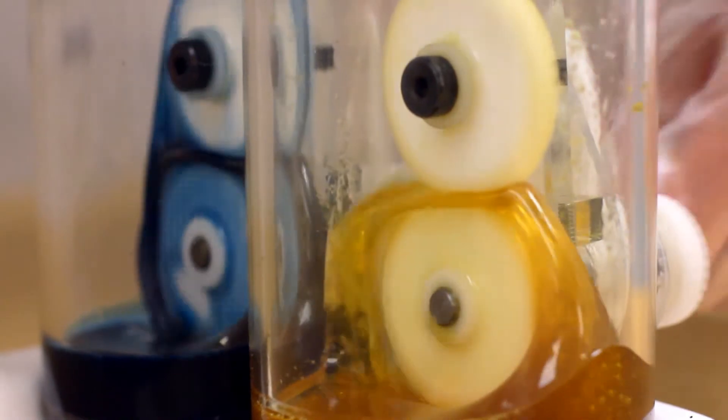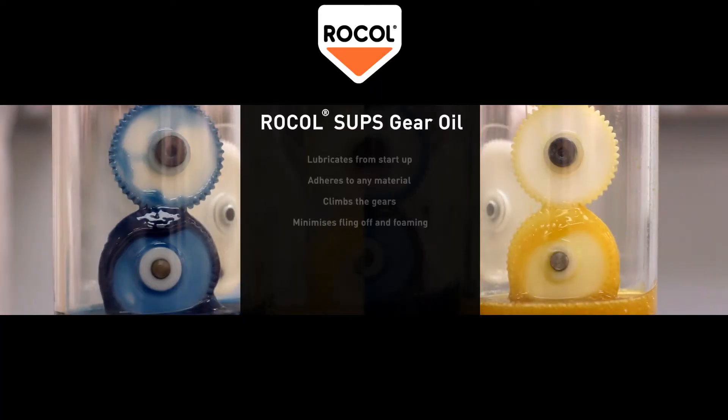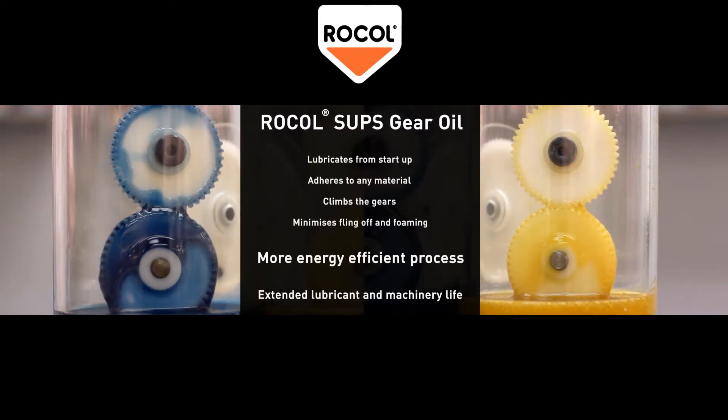The result of using Roco Gear Oils with the Startup Protection System is a more energy-efficient process and extended lubricant and machinery life.